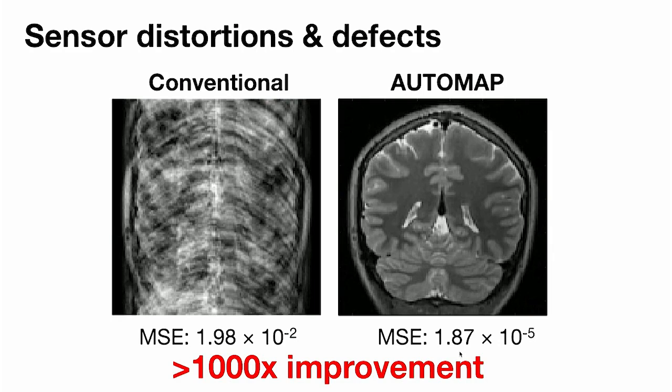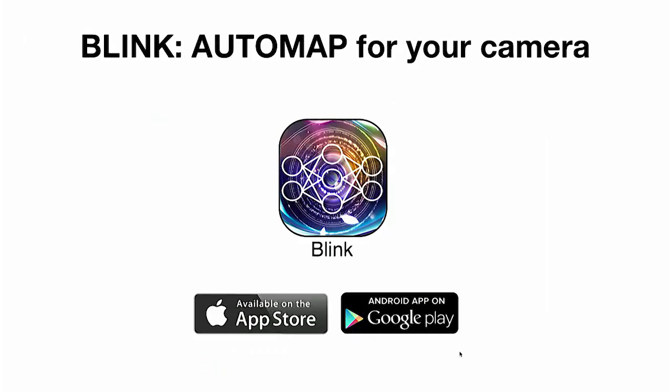On top of that, AutoMap can characterize sensor defects and automatically compensate for them. This work has gained incredible traction and excitement at scientific conferences all around the world. Now we want to bring this into the commercial space with Blink — AutoMap for your smartphone camera — which will take images far superior to what your default camera app will provide.